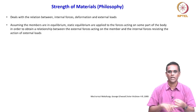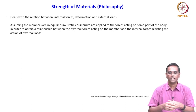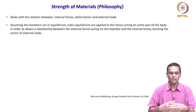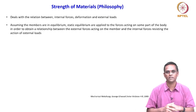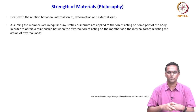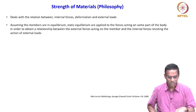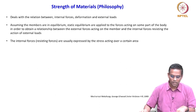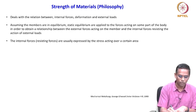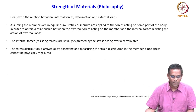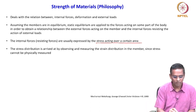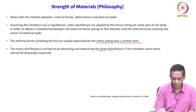All bonds — primary and secondary — resist external forces. So external force is resisted by internal force, which is termed stress. We need to look at the stress distribution in the body — whether it acts at a point or is distributed. The internal resisting forces are usually expressed as stress acting over a certain area. The stress distribution is arrived at by observing and measuring the strain distribution.